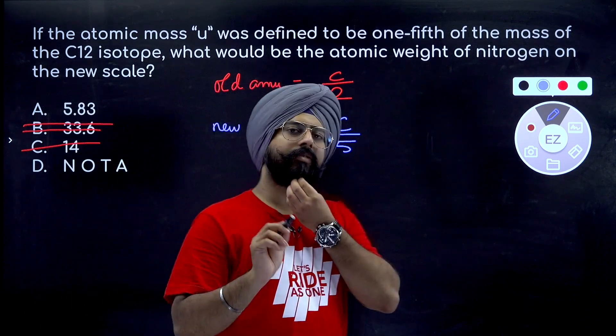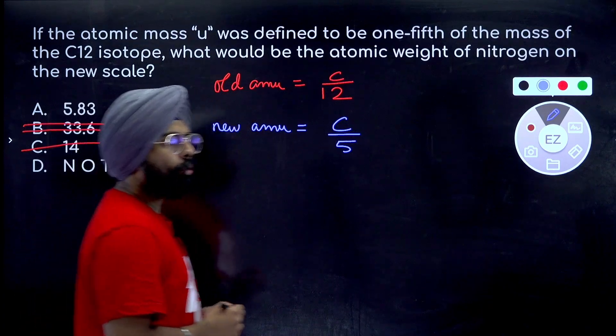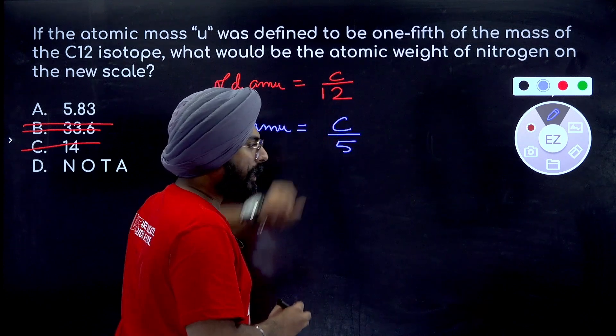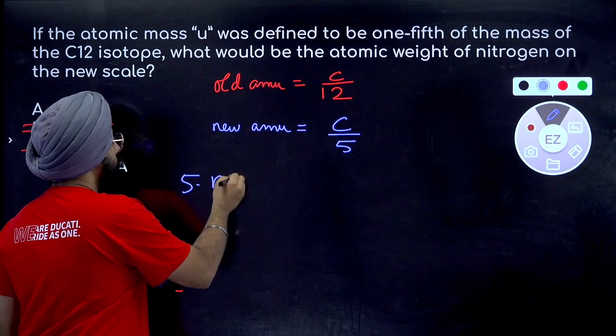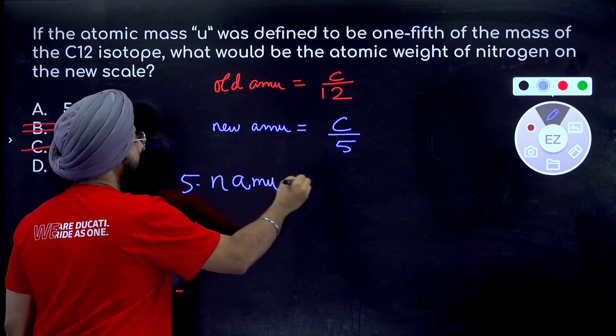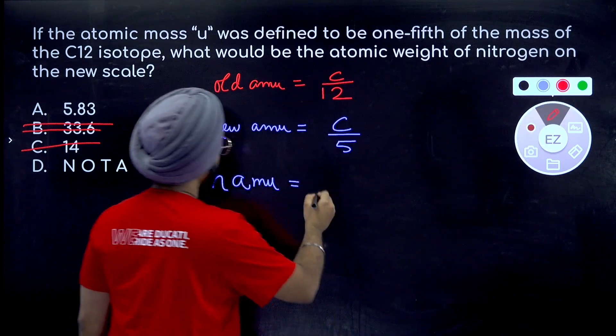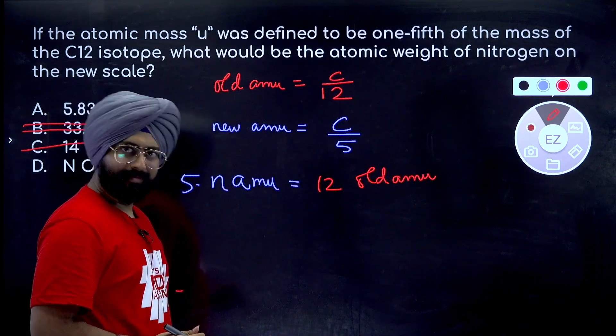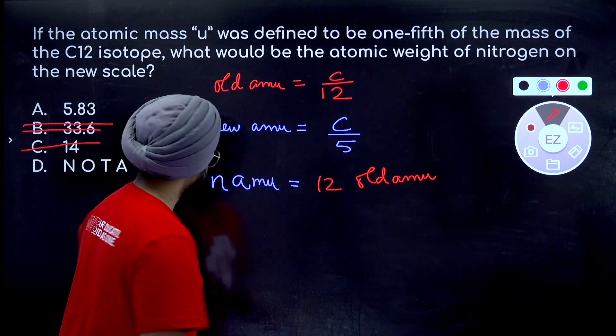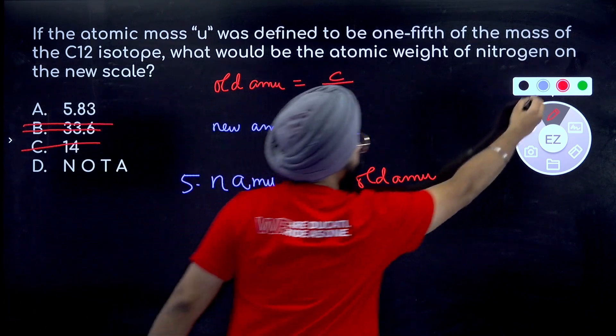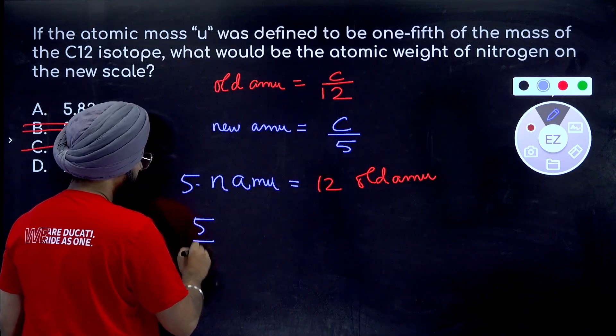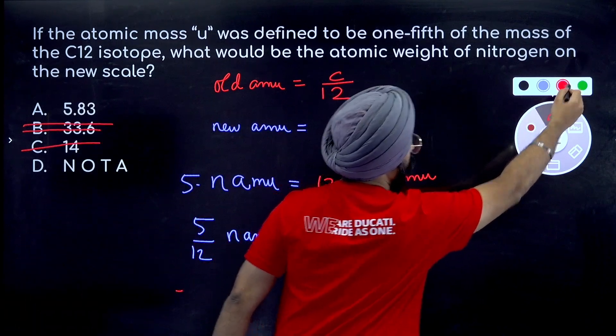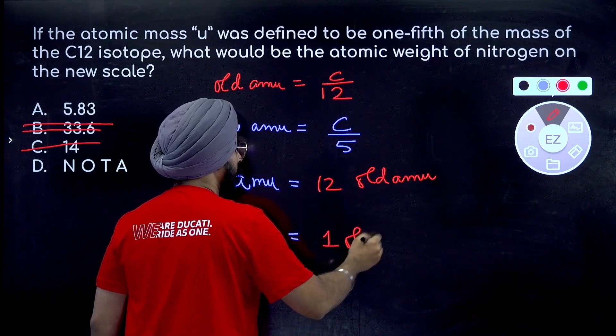Can we find a relationship over here between new atomic mass unit and old atomic mass unit? C is the common factor, can you see from this? Can I write that 5 times new atomic mass unit is equal to 12 times the old atomic mass unit? Just extending this further, I can write 5 by 12 new atomic mass units are equal to 1 old atomic mass unit.